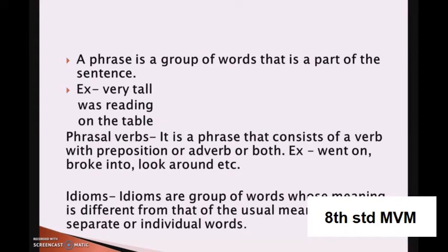Now coming to the next part: what is called phrasal verbs. A phrase is a group of words that is a part of a sentence — for example, very tall, was reading, on the table. A phrasal verb is a phrase that consists of a verb with a preposition or adverb or both. Examples: went on — means proceed; broke into — means open; look around — means search.